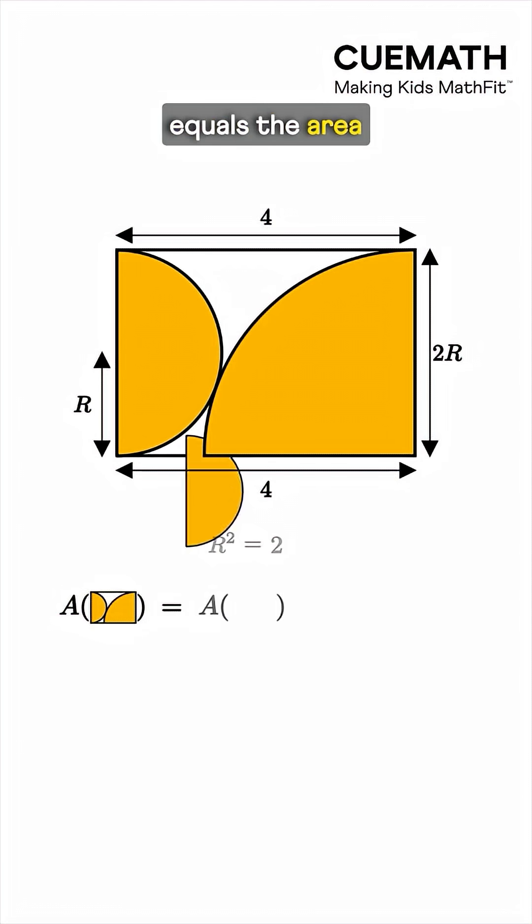Now the shaded area equals the area of the semicircle, pi r squared over 2, plus the area of the quarter circle, pi 2r squared over 4.